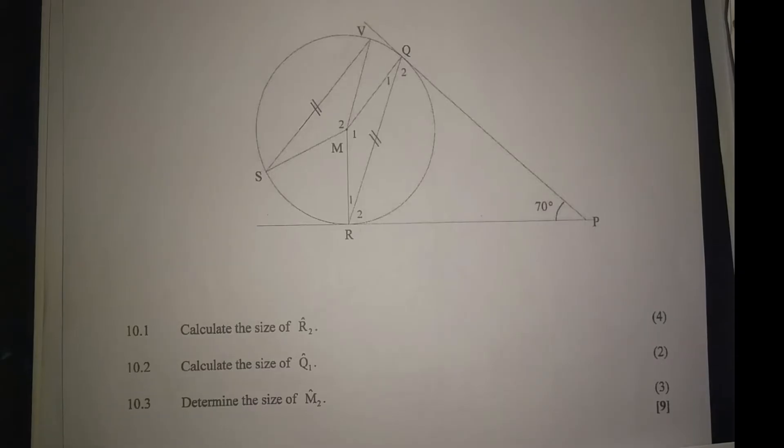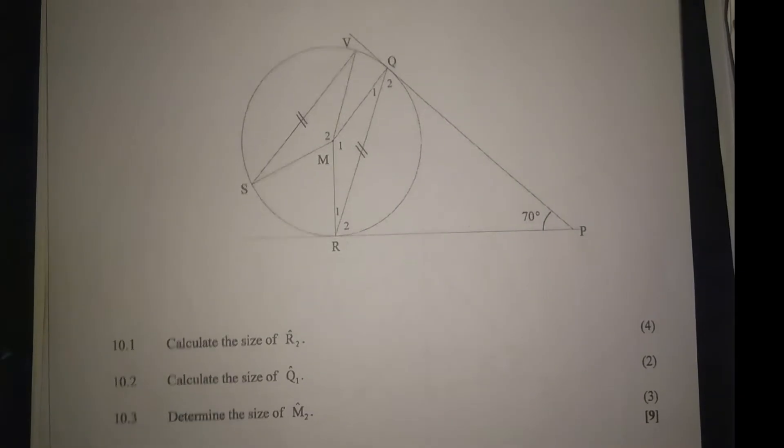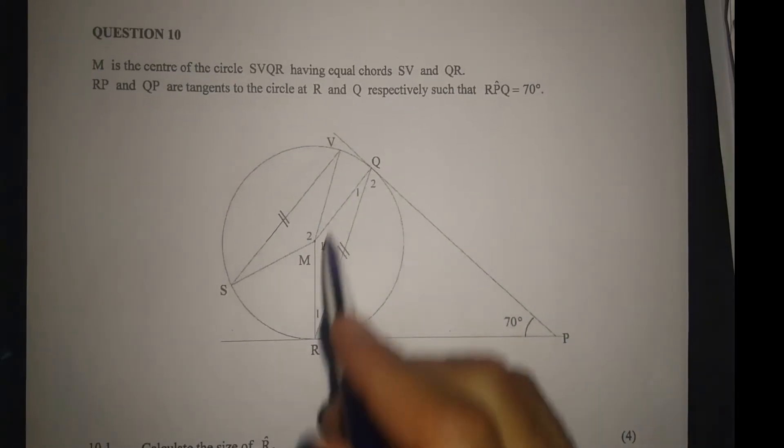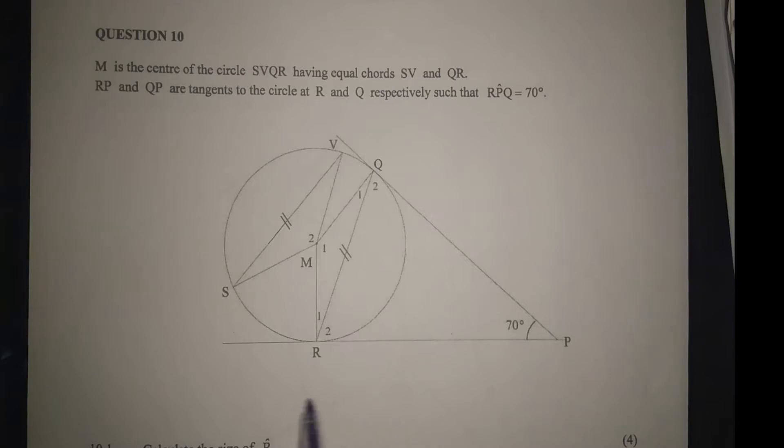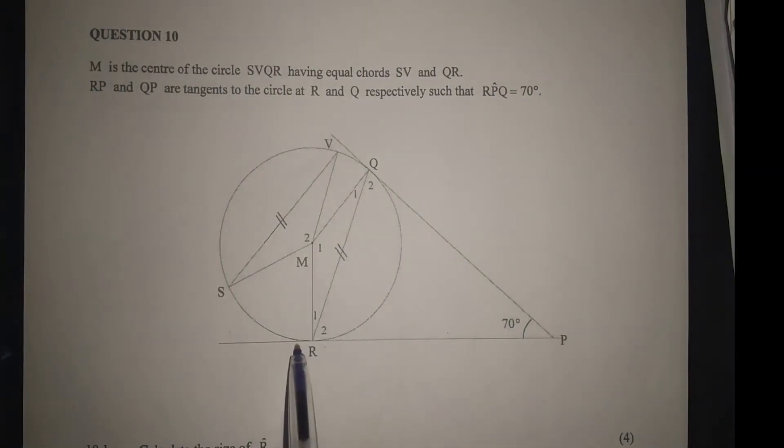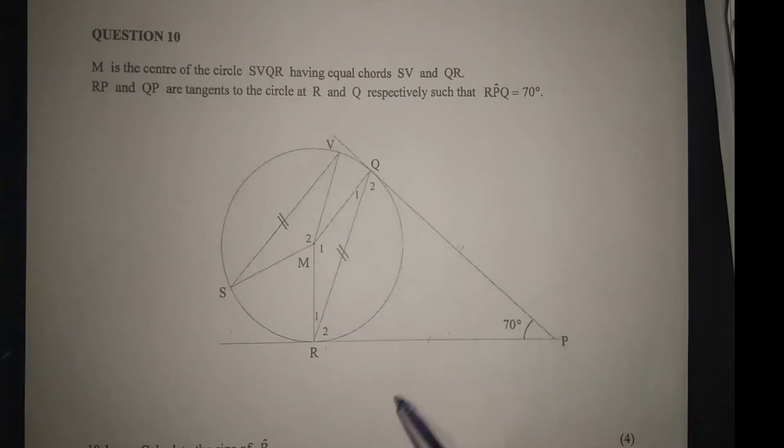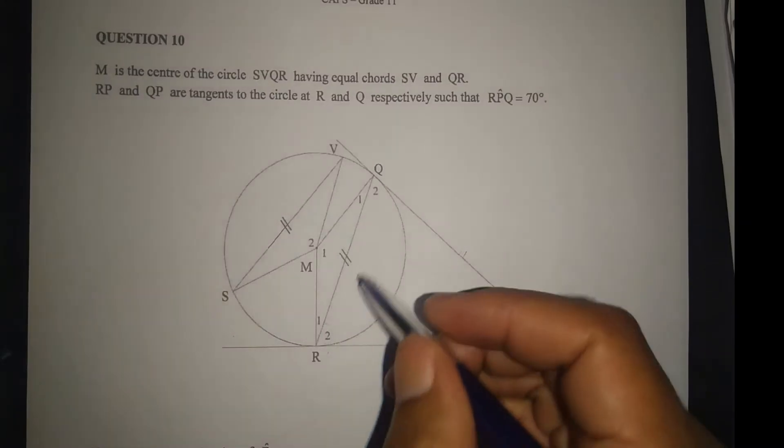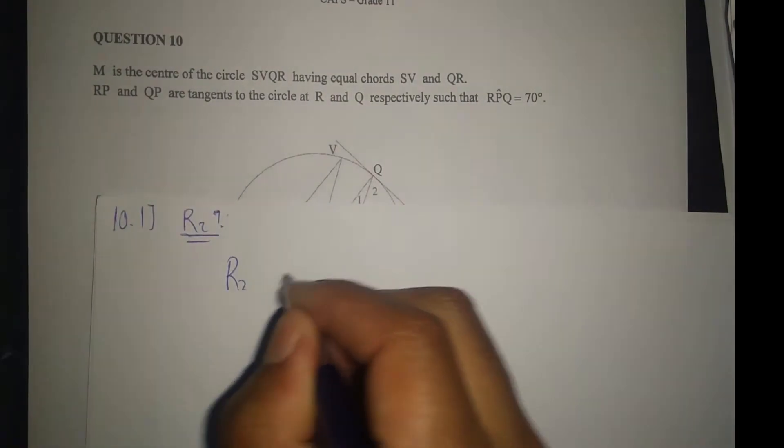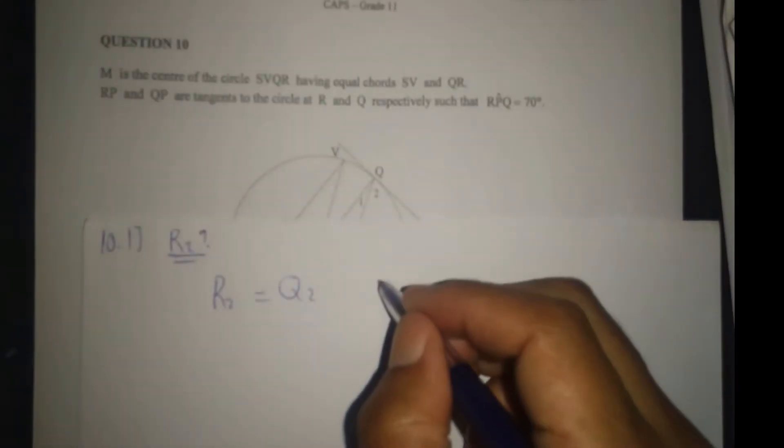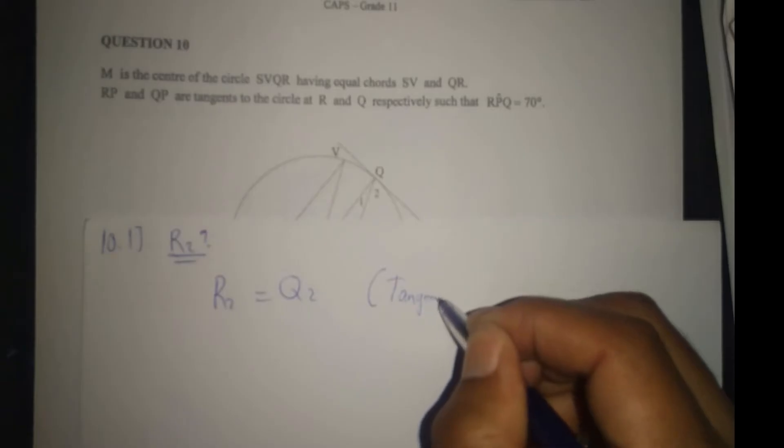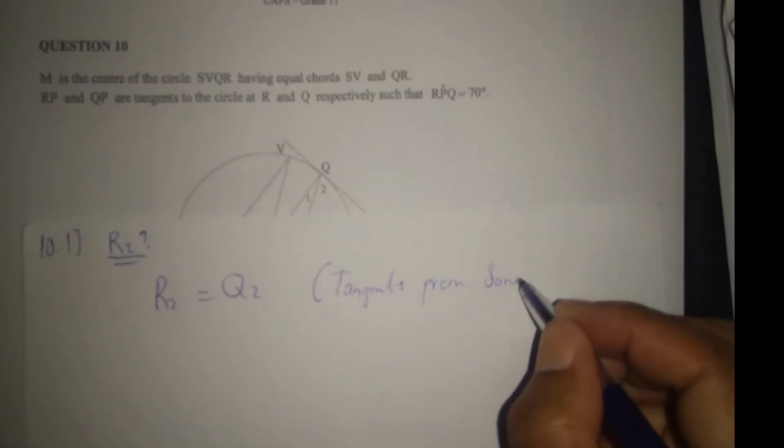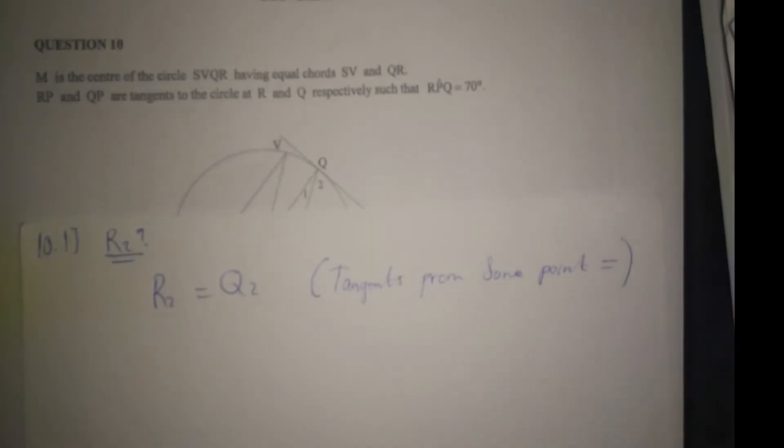Now R2 is inside triangle RQP, and triangle RQP is an isosceles triangle because of Theorem 8 - tangents from the same point are equal. The sides of this triangle are equal, making it an isosceles triangle. So it means R2 is equal to Q2.